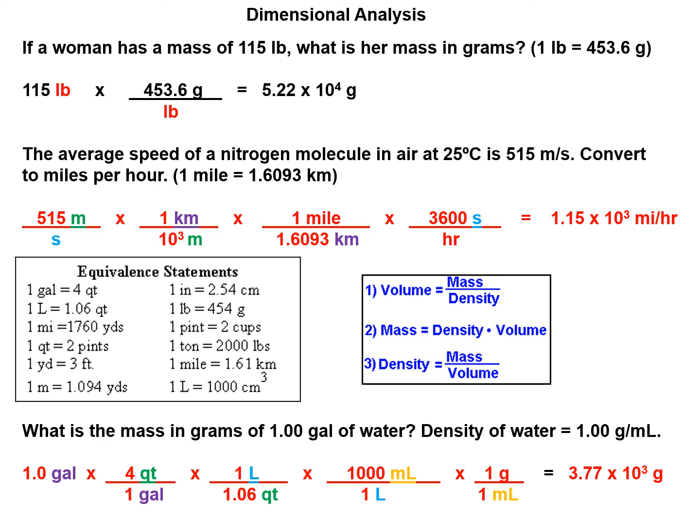And then we times that by the density. We know that it's one gram per milliliter. Now the milliliters cancel out in orange, and what we're left with is 3.77 times 10 to the third grams.